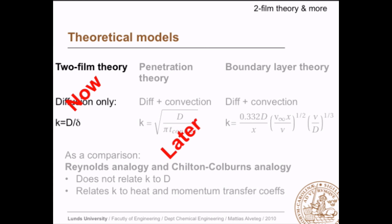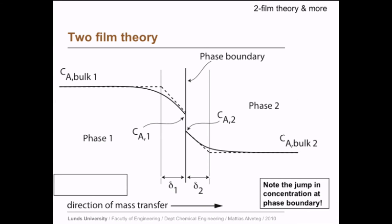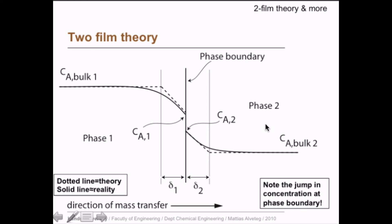Now we deal with two-film theory. In this theory, we simplify by saying that in each bulk phase everything is constant up to the film, then all the change occurs within the film. At the phase boundary there is a jump in concentration, and then concentration decreases through the second film, becoming constant again in the bulk of the other phase. The dotted line represents the theory; in reality there is usually a gradual change as you approach the boundary, so the film thickness is often not that well-defined.